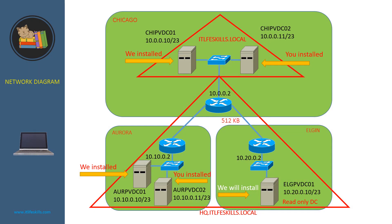We are going to install a RODC LPVDC01 in this AD system. In a normal condition, we would have the Active Directory replicated from LPVDC01. However, in this case, the connection from LG Office to Chicago Data Center is only 112 KB. So we should export the Active Directory database from LPVDC01, ship it to LPVDC01, and install LPVDC01 from the media. This is a typical installation in a real working environment.